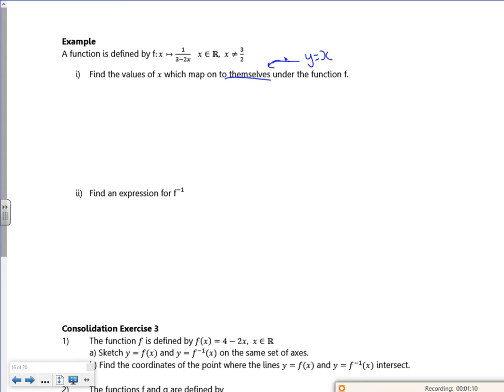So I've got 1 over 3 minus 2x equals x. And then I've got 1 equals x times 3 minus 2x. If I just expand the brackets and rearrange it as a quadratic, I can solve it and I get x is a half or x is 1.